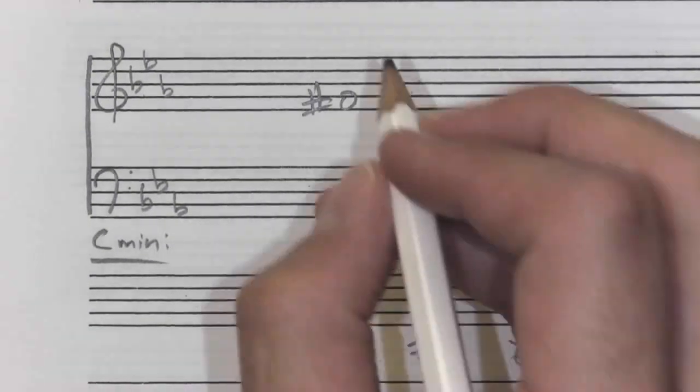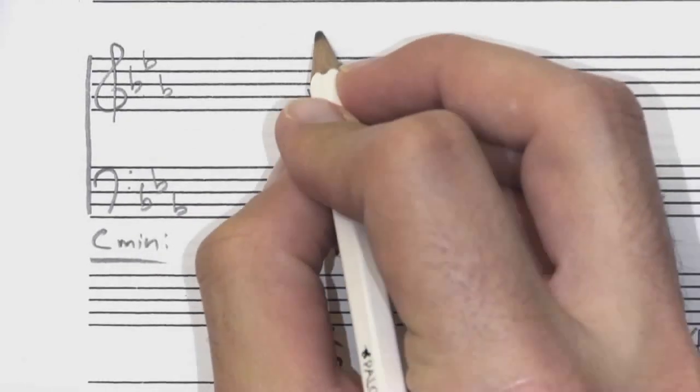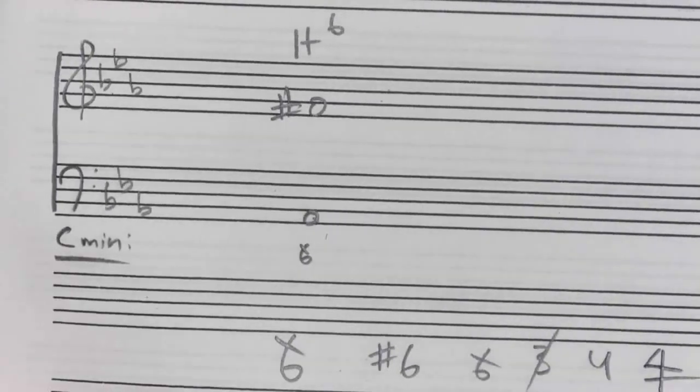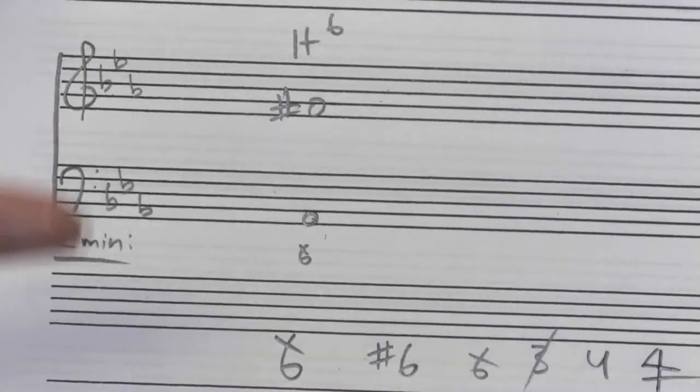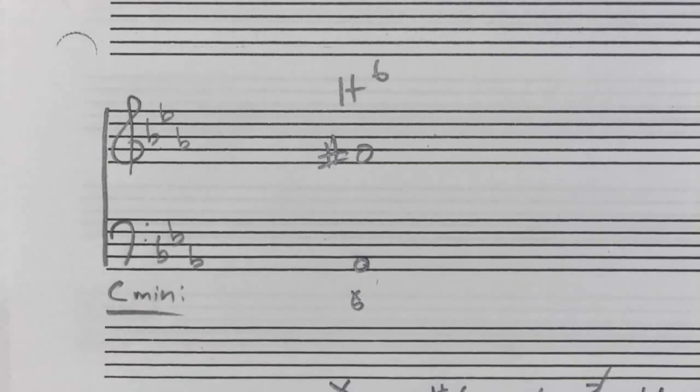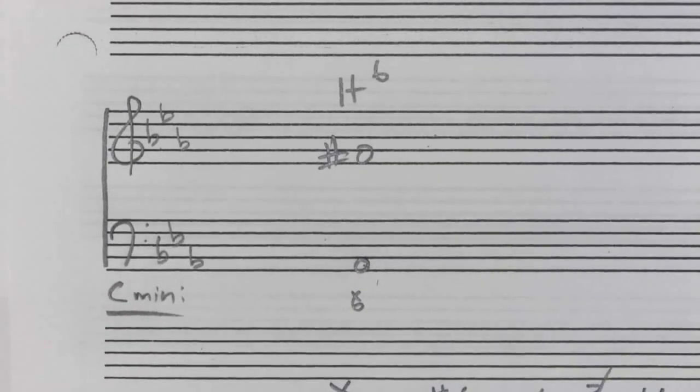So this is the Italian six chord, right? There's our Italian six chord. It's going to be A flat in the bass line. It's going to have sharp six, either six with a slash or sharp six on it.